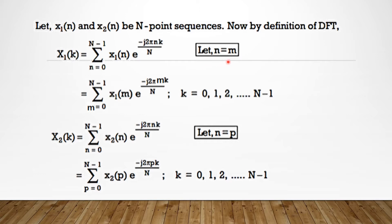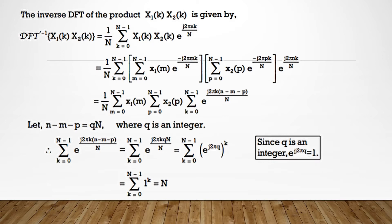Now substitute n as m. Then X1(k) equals sigma from m equal to 0 to N minus 1 of x1(m) e raised to minus j 2 pi mk by N, for k equal to 0, 1, 2, 3 up to N minus 1. Then X2(k) equals sigma from n equal to 0 to N minus 1 of x2(n) e raised to minus j 2 pi nk by N. Let n equal to p. Then X2(k) equals sigma from p equal to 0 to N minus 1 of x2(p) e raised to minus j 2 pi pk by N, for k equal to 0, 1, 2 up to N minus 1. Now take the inverse DFT of the product X1(k) and X2(k).